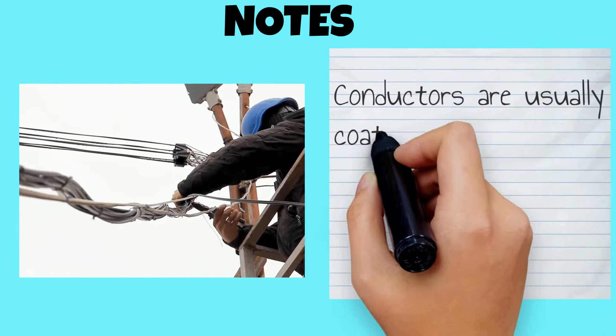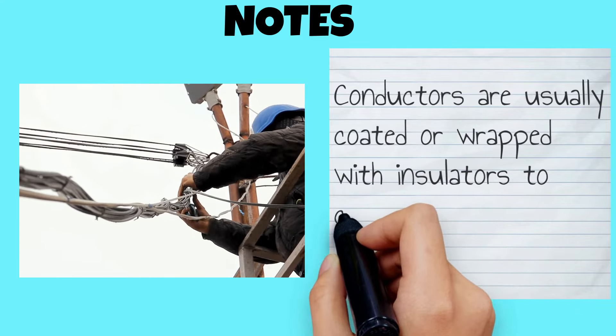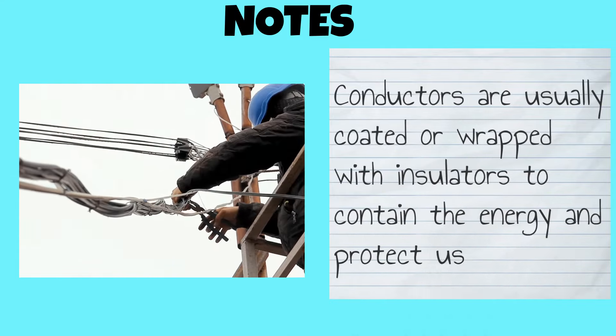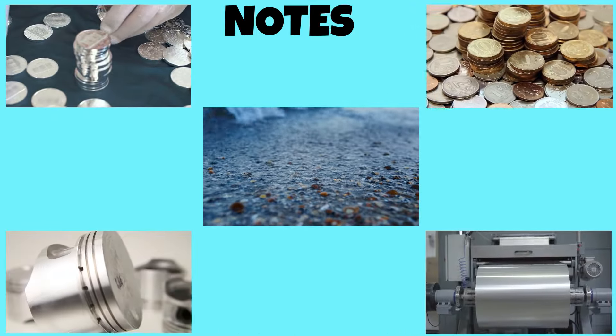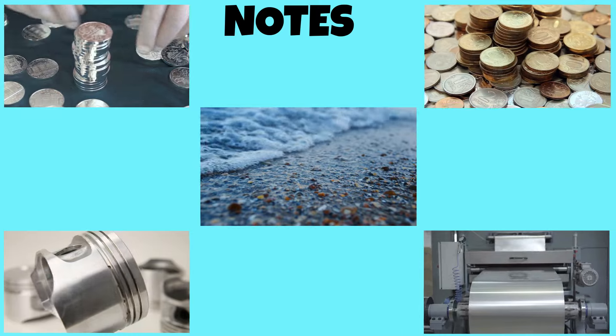Conductors are usually coated or wrapped with insulators to contain the energy and protect us. Seawater, silver, copper, aluminum, and iron are all good conductors of electricity.